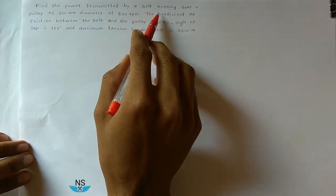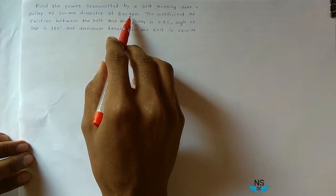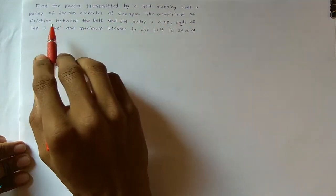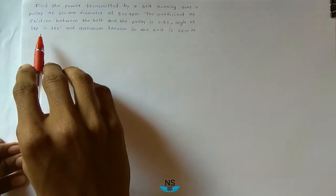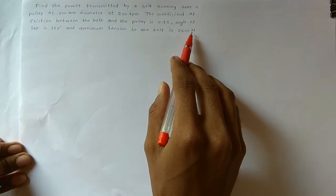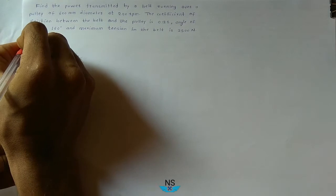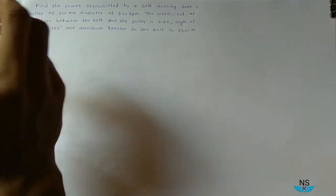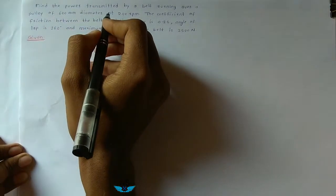Find the power transmitted by a belt running over a pulley of 600mm diameter at 200rpm. The coefficient of friction between the belt and the pulley is 0.25, angle of lap is 160 degrees, and maximum tension in the belt is 2500N.